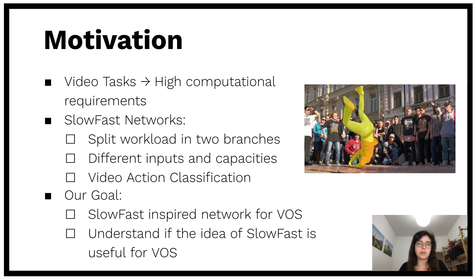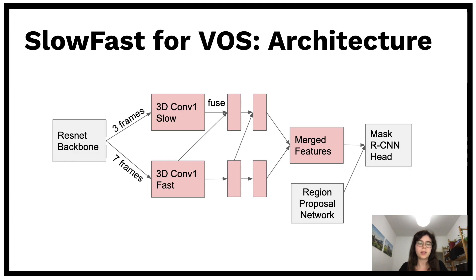With this we want to evaluate if the idea of slow-fast is generally useful for VOS. The main idea of our architecture was to extend Mask RCNN with a slow-fast module that integrates temporal context. In white you see the original Mask RCNN parts which were fine-tuned on the Davis dataset. The slow-fast module is shown in red and it consists of two pathways, both having three layers with 3D convolutions.